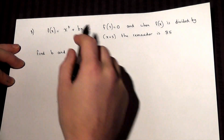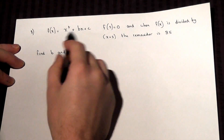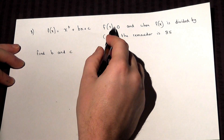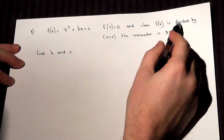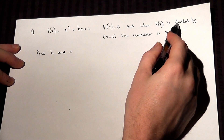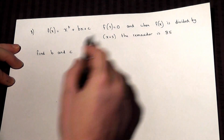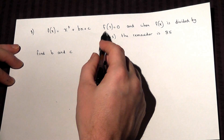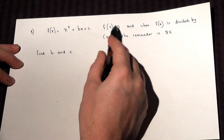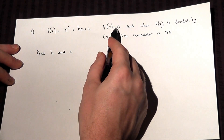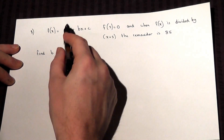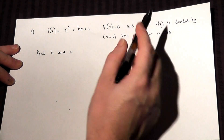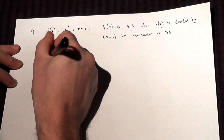In this question, we're given a general function and two bits of information, and we're asked to find what b and c are. We're told that f of 2 equals 0, so if we let x equal 2, the answer will equal 0.